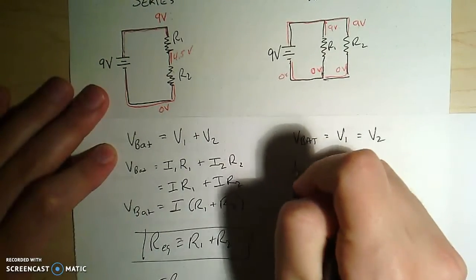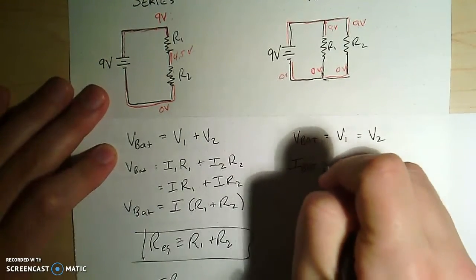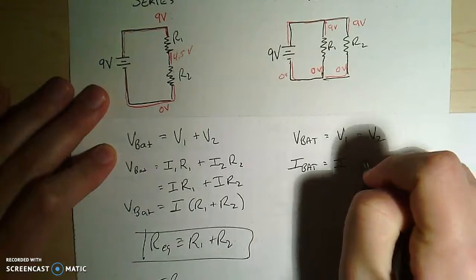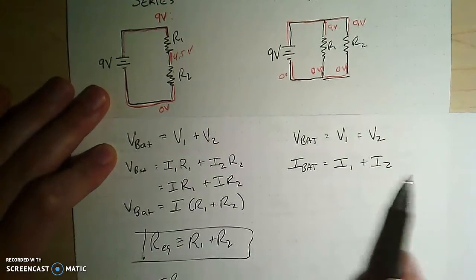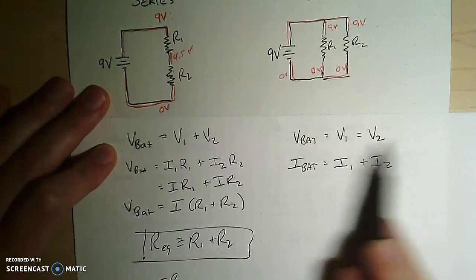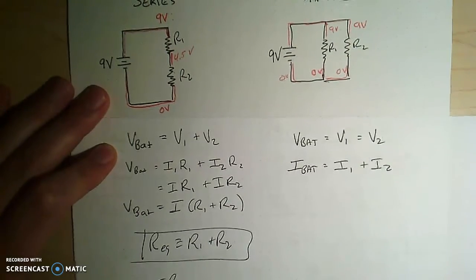So what I can say is that the current going through the battery has to equal the current going through one plus the current going through two. So unlike here where the currents were the same, I can't say the currents are the same. I can say the voltages are the same, but I can't say that the currents are the same.